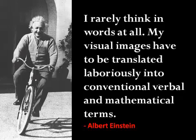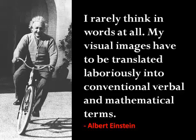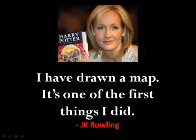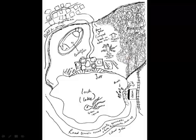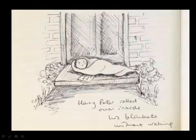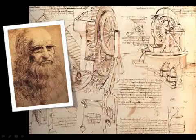If I show you something rather than tell you about it, the likelihood of your mind following me through the entire idea increases hundredfold. You don't need to take my word for it. One of the smartest people who ever lived, Albert Einstein, said: 'I rarely think in words at all. My visual images have to be translated laboriously into conventional verbal and mathematical terms.' The most financially successful author of all time, J.K. Rowling, tells us: 'When I started my stories, I didn't write outlines — I drew a map. It was the first thing I did.' She drew her map of Hogwarts and her drawing of baby Harry Potter on the Dursley's doorstep before writing the books.